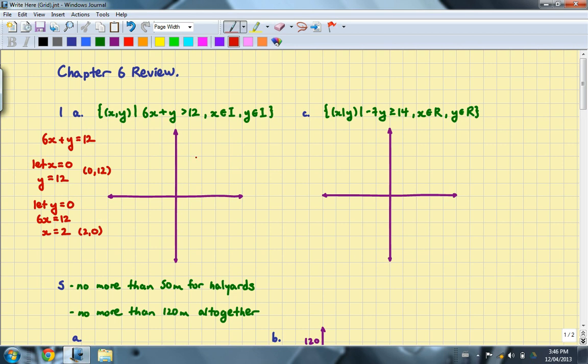In this case, the point 2, 0 is going to be right here. I'm going to go up by 2's for every square. And the point 0, 12 will be somewhere up here. And since our inequality does not include the boundary itself, this will be a dashed line. I'm going to go ahead and draw that in.